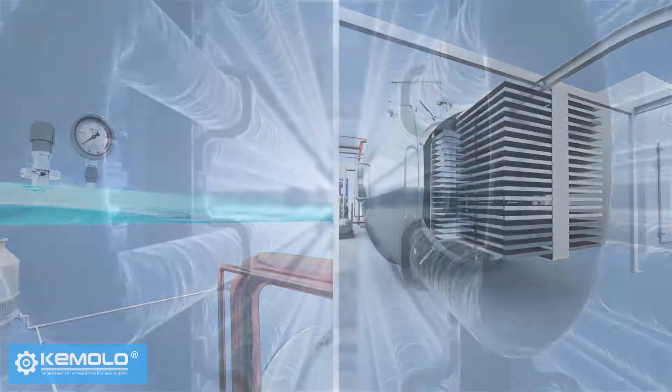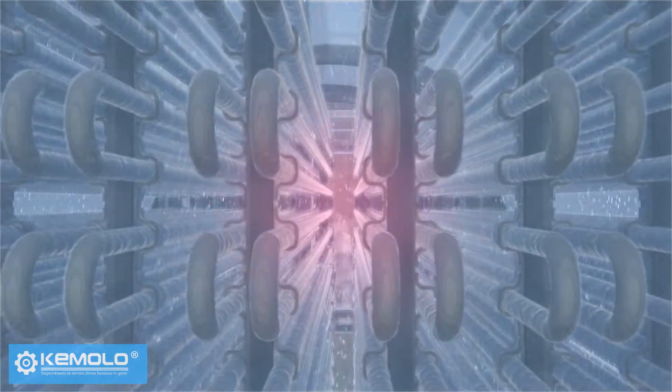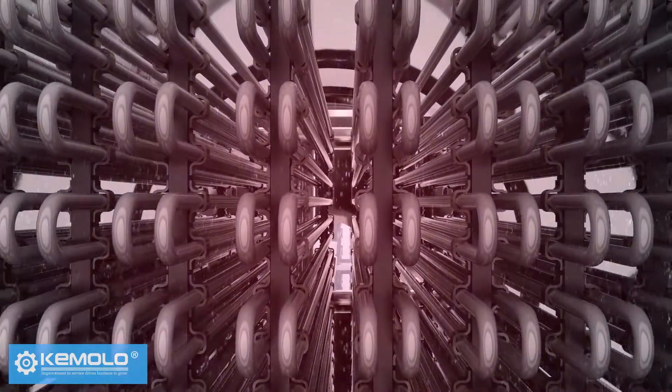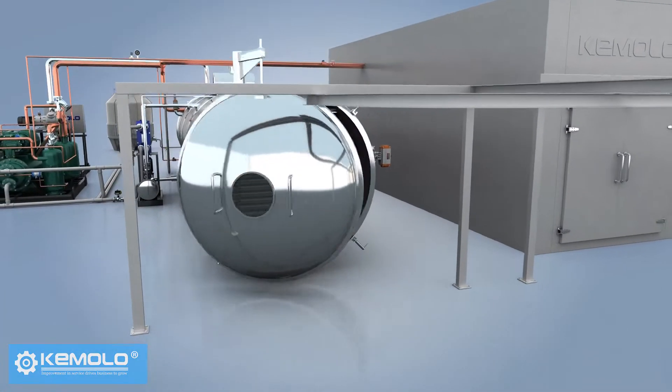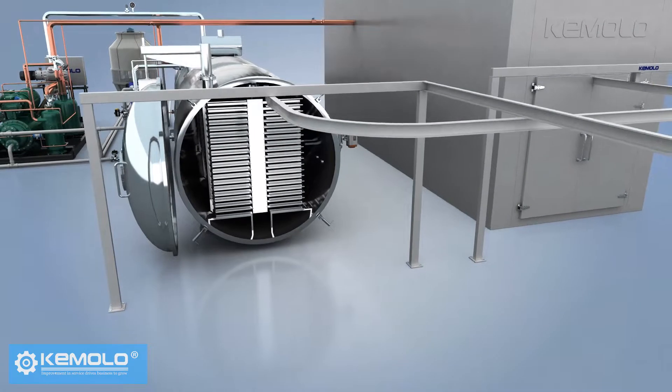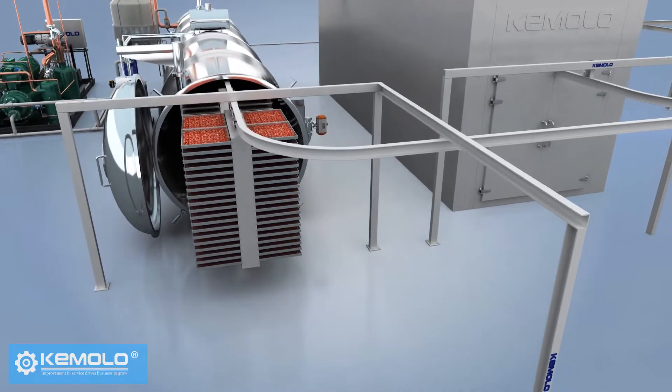After discharging, the frost on the water vapor collector needs to be defrosted for the next batch of production. Therefore, the freeze drying must be produced in batches and the interval between each batch is about 1-2 hours.